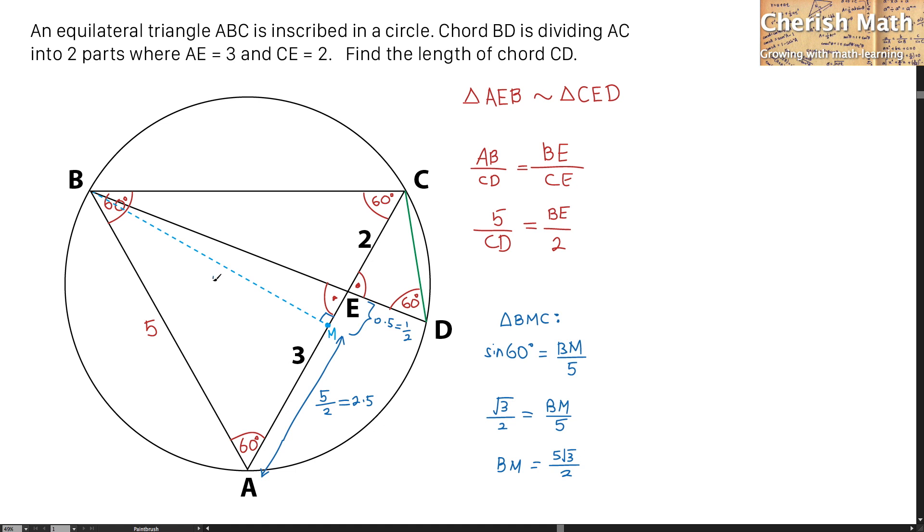It is now time to solve for the value of this line BE by referring to the triangle of BME. In this triangle, I am going to use the Pythagorean theorem to solve for line BE. That is going to be BE equals the square root of 5 times the square root of 3 divided by 2 squared plus the square root of 1 half.